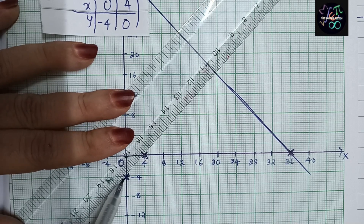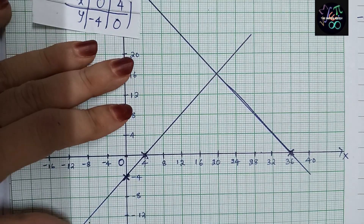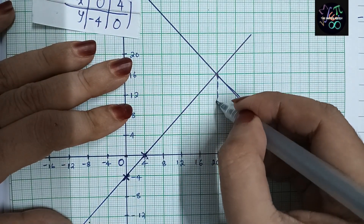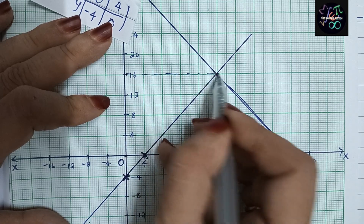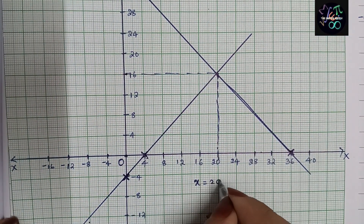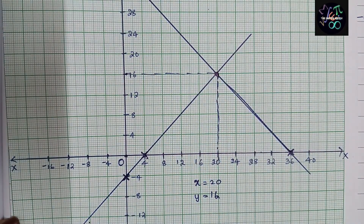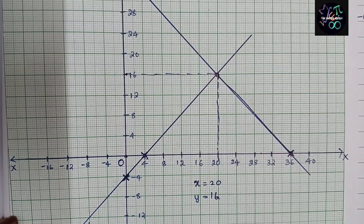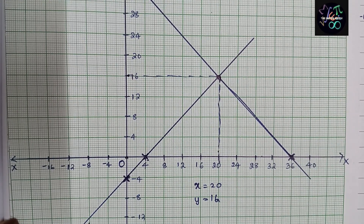We got the answer: the point of intersection gives x equals 20 and y equals 16. So the length of the garden is 20 meters and the width is 16 meters. This completes Question Number 5 of Exercise 3.1. In my next video I am coming up with the next problems — do like and share, thank you.